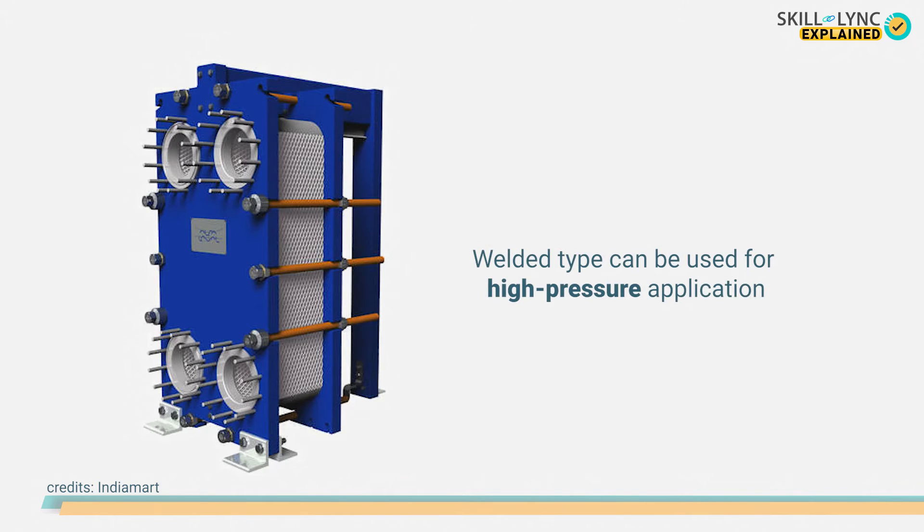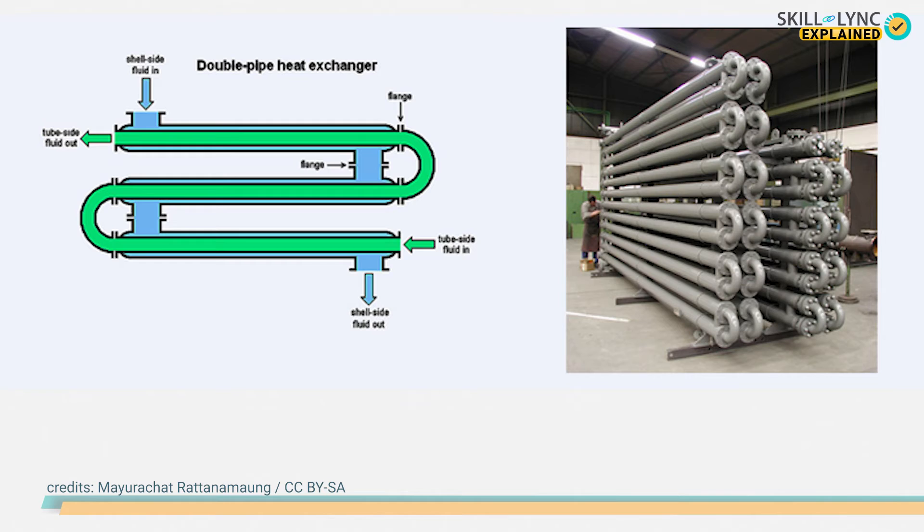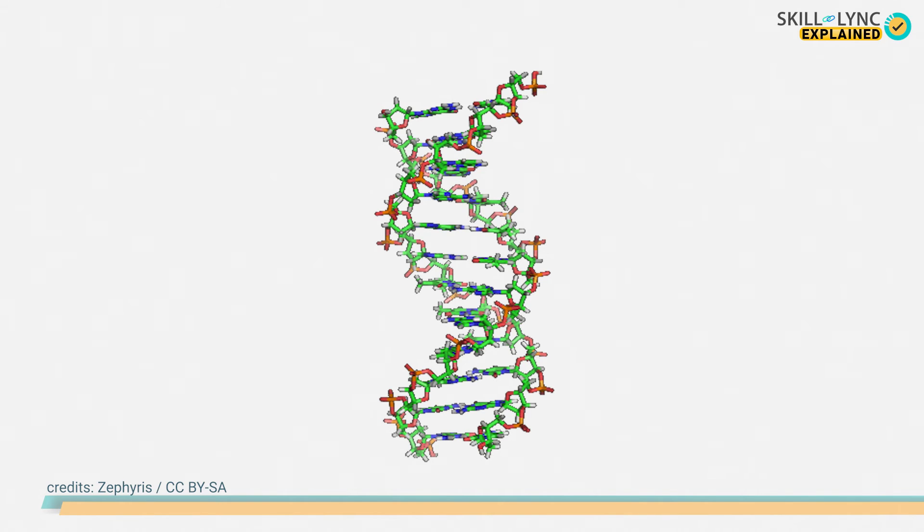Moving on, the next type is the helical coil heat exchanger. As we have seen earlier, the double pipe heat exchangers are simple in design but not very efficient. Also, the size of shell and tube heat exchangers can be a problem for limited spaces. The solution to the problem of limited space can be derived from our DNA, and we're not joking.